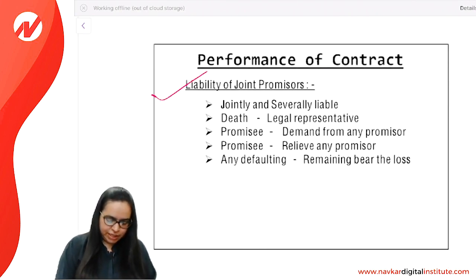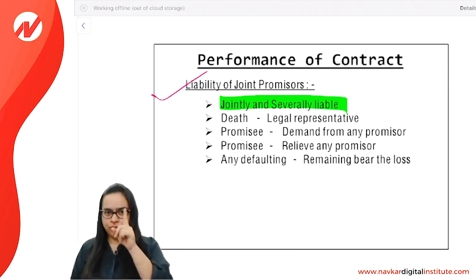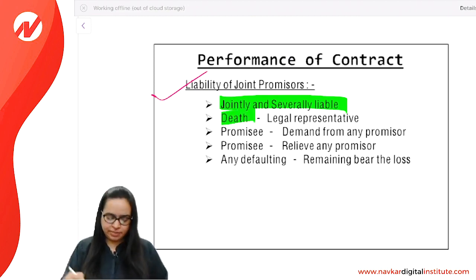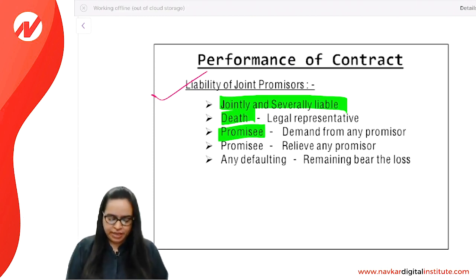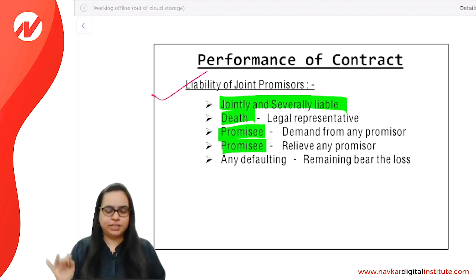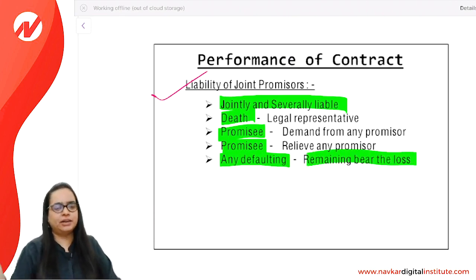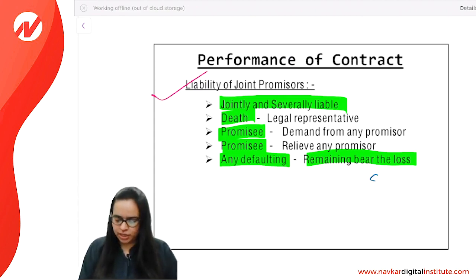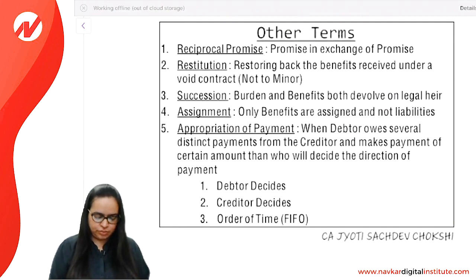Liability of joint promisors: jointly and severally. On death of a promisor, his legal representative pays. The creditor can demand payment from any one of the joint promisors. The creditor can also release one promisor. If one defaults, the others must bear the loss. If no ratio is agreed, it will be an equal ratio — 'unless otherwise agreed, it will be equal ratio.'